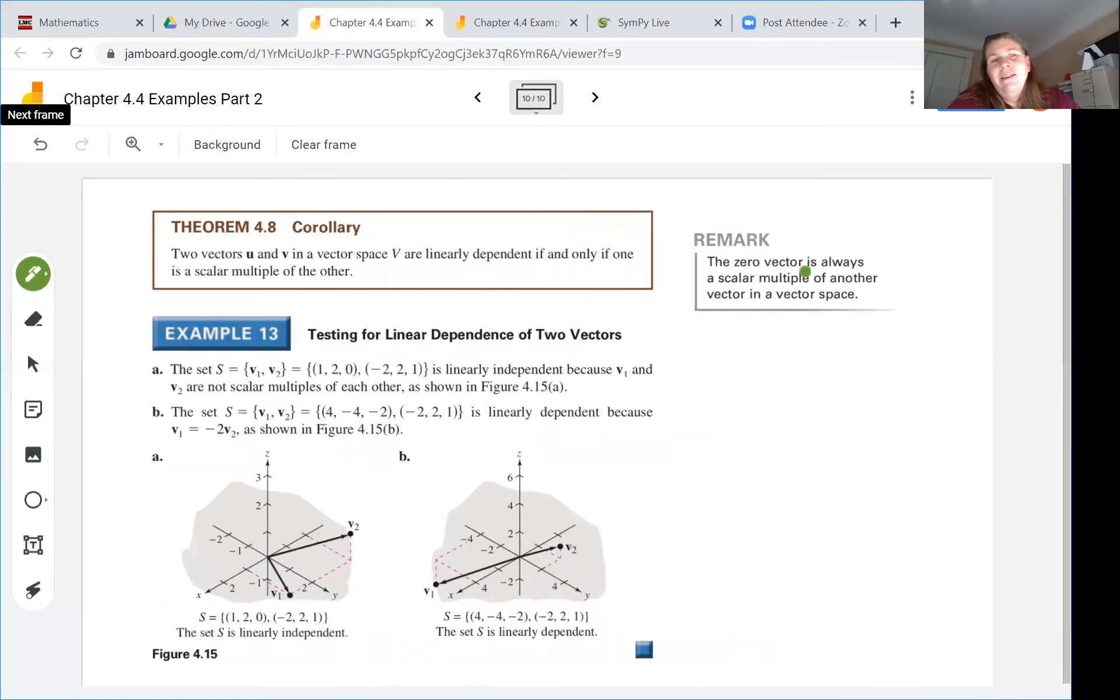Here's a corollary. A corollary is something that comes out of a theorem after having proved the theorem. So the two vectors u and v in the vector space v are linearly dependent if and only if one is a scalar multiple of the other and so we showed that in our proof.